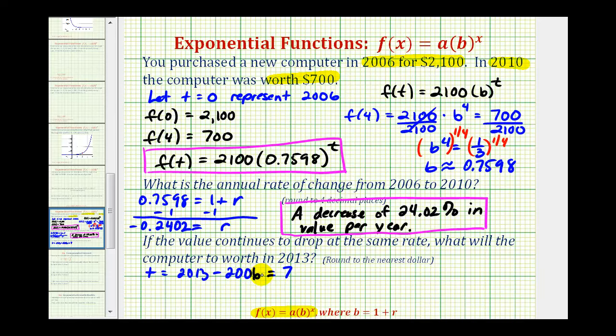So to find the value of the computer for 2013, we need to evaluate f of seven. Which would be 2,100 times 0.7598, raised to the power of seven. And now we'll go back to the calculator and round this value to the nearest dollar.